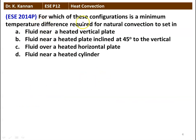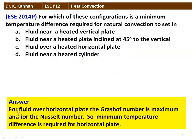Next question: for which configuration is the minimum temperature difference required for natural convection to set in? Options include fluid near a heated vertical plate, at 45 degrees to vertical, fluid over a heated horizontal plate, or fluid near a heated cylinder. The answer is fluid over a horizontal plate — its Grashof number is maximum, so the minimum temperature difference is required.